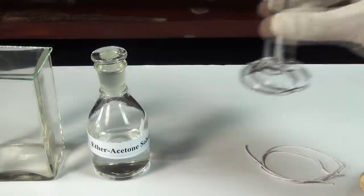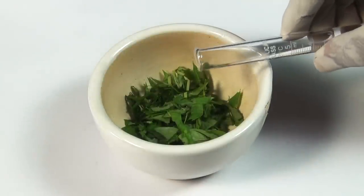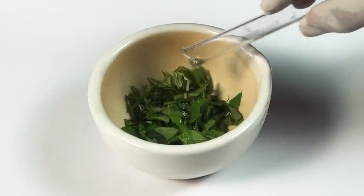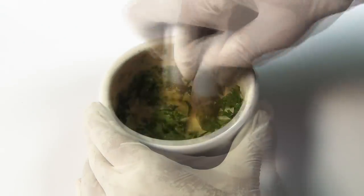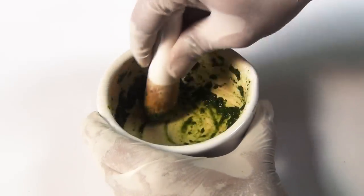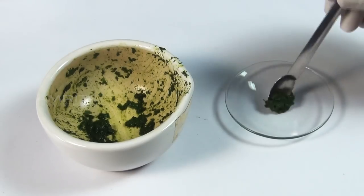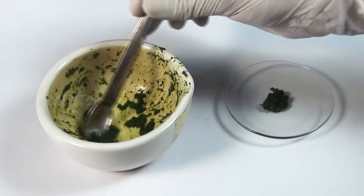Take a measuring cylinder that contains 5ml of acetone and pour it into the mortar. Grind the spinach leaves using the mortar and pestle. Place the extract into a watch glass using a spatula.